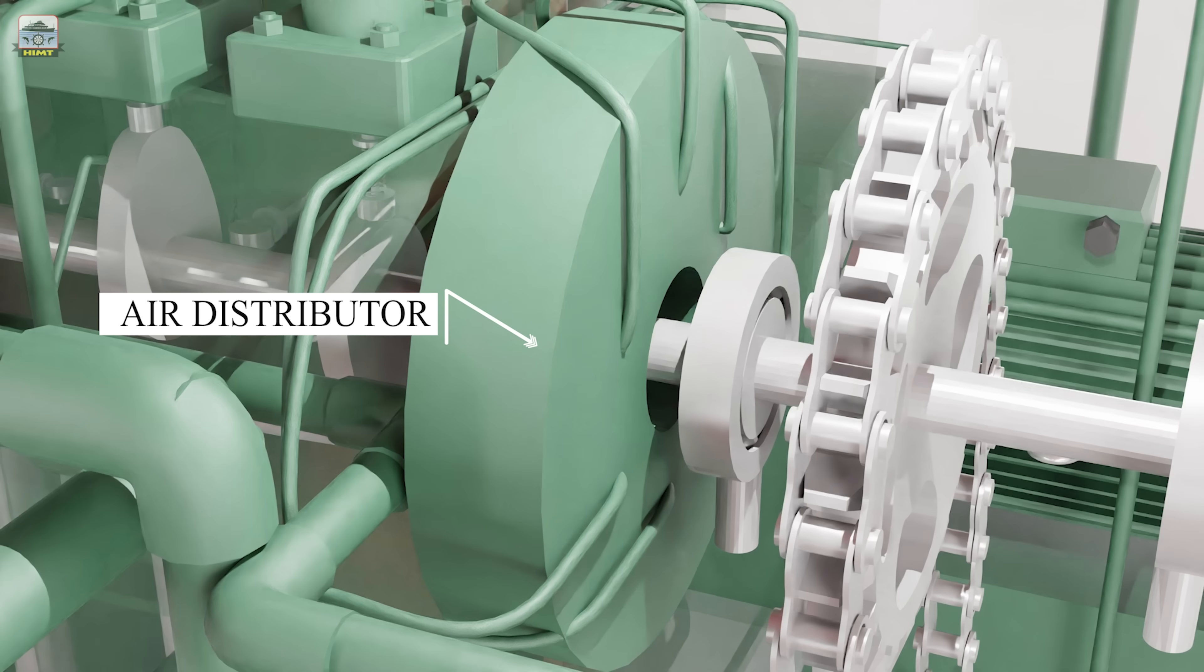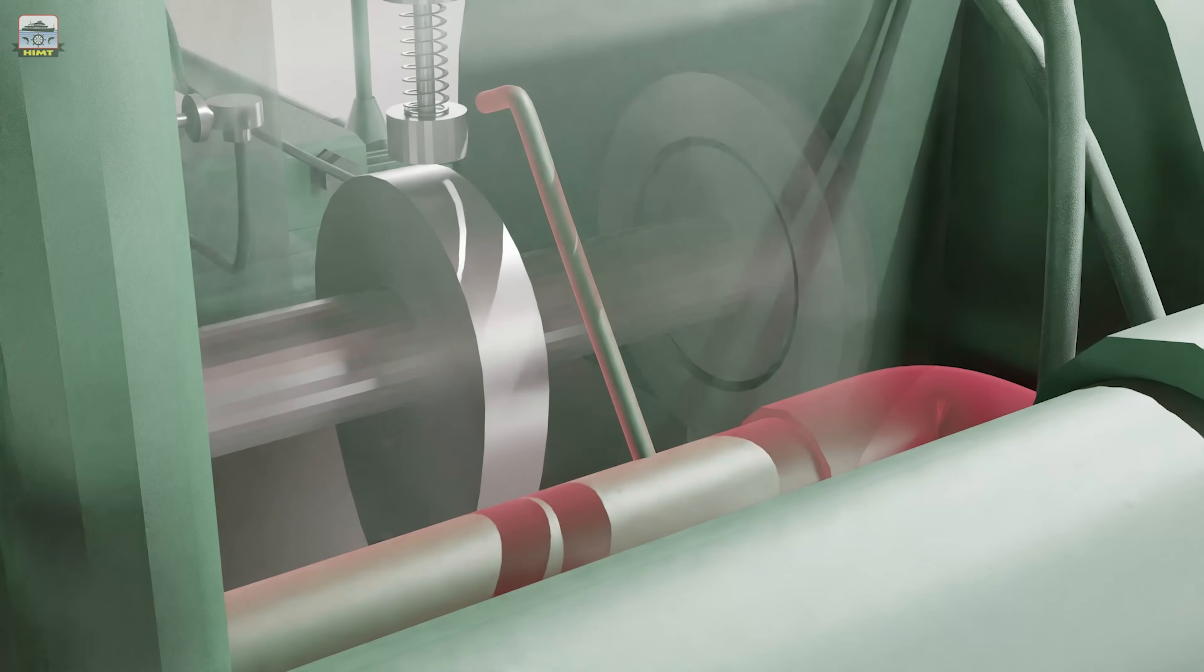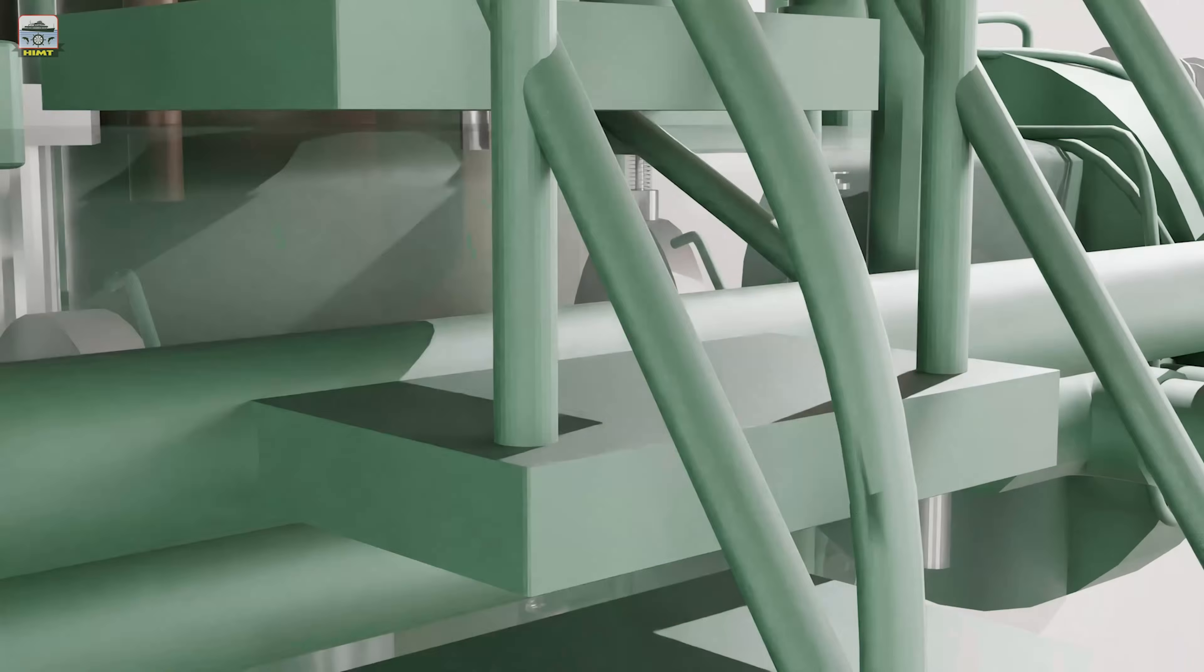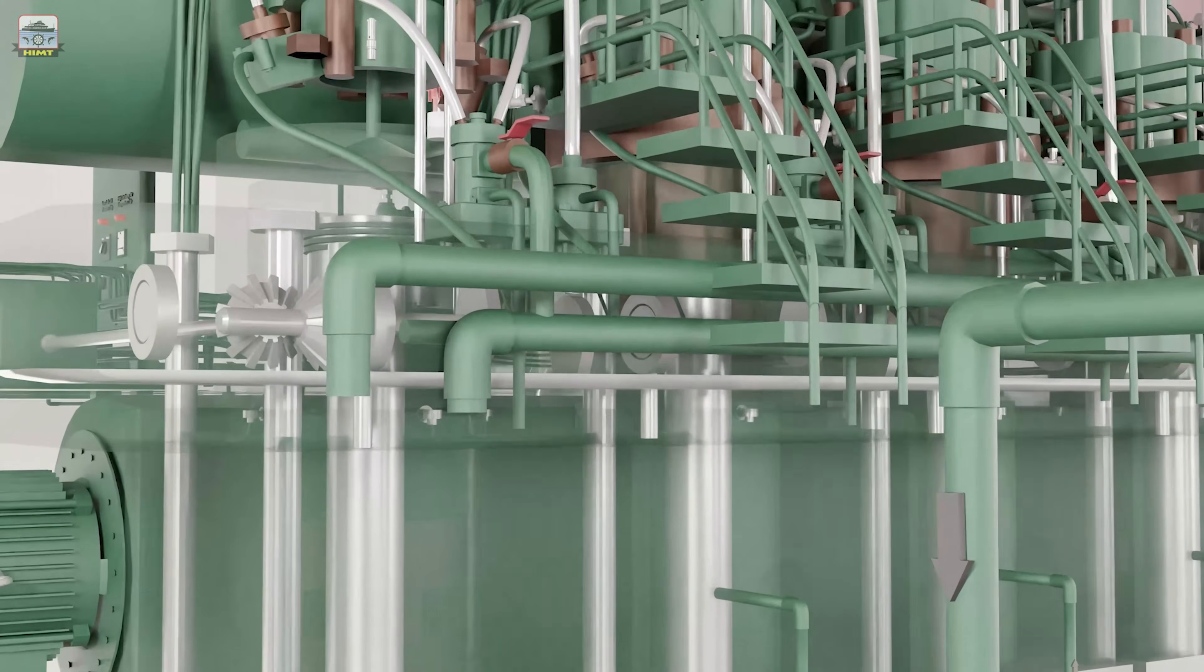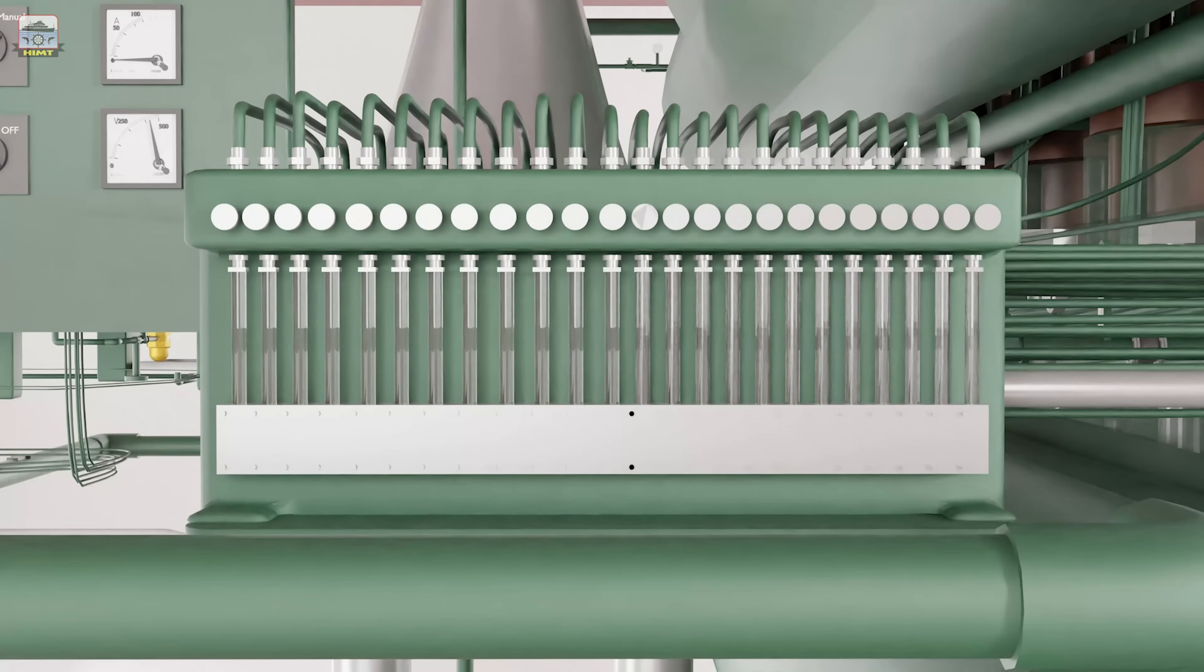The lubricating oil for the camshaft bearings, the cams, the cam followers, and the operating oil for the exhaust valve are provided by a separate camshaft lubrication system. The camshaft also drives a cylinder lubricator to inject cylinder lube oil at timed intervals through the lubricating quills.